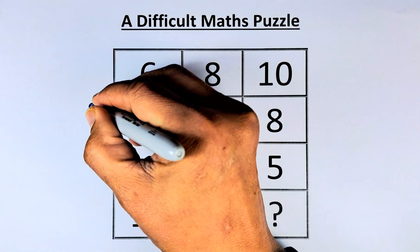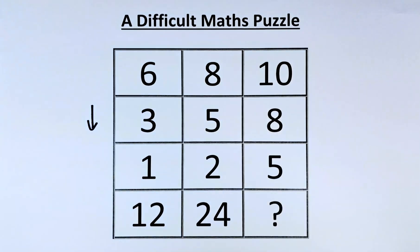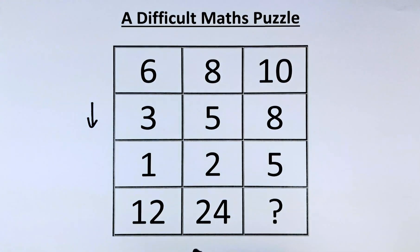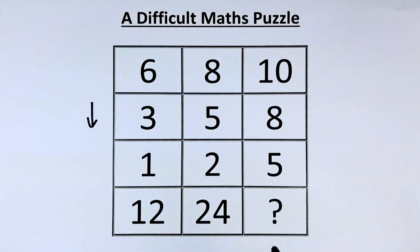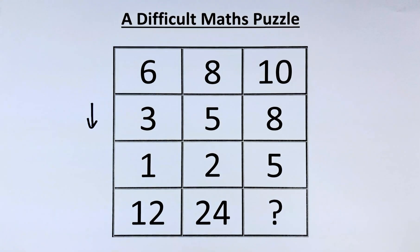In fact, this works on the terms of columns. So we need to manipulate 6, 3, 1 to get 12. 8, 5, 2 to get 24. And 10, 8, 5 to get the question mark.